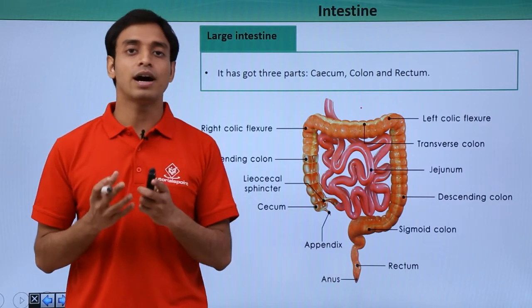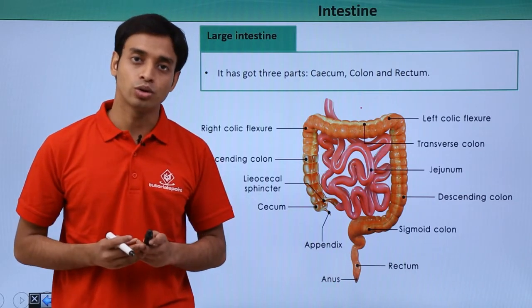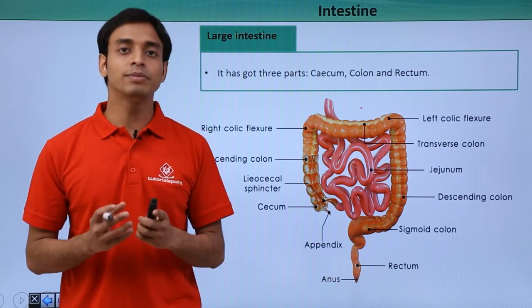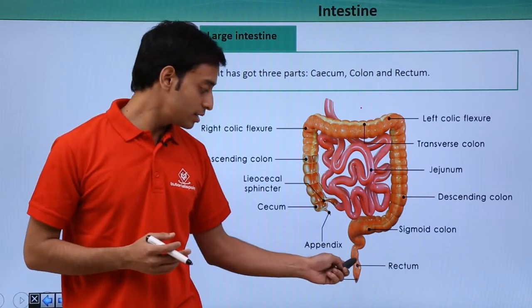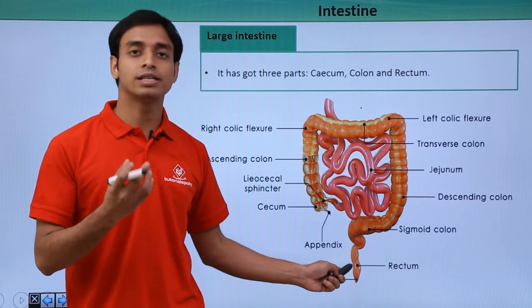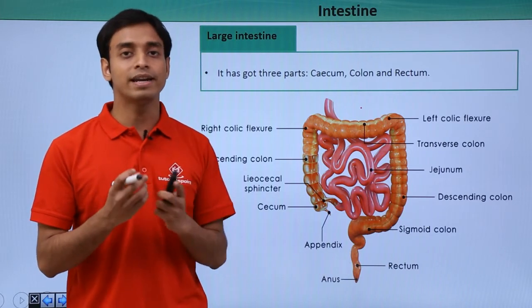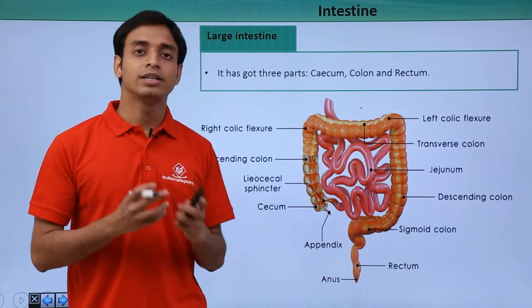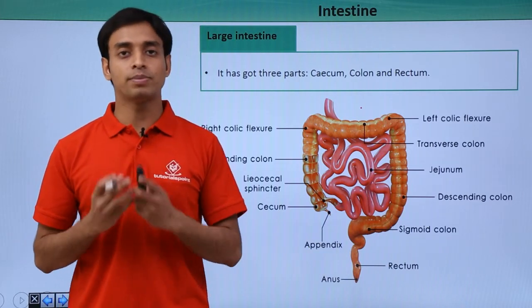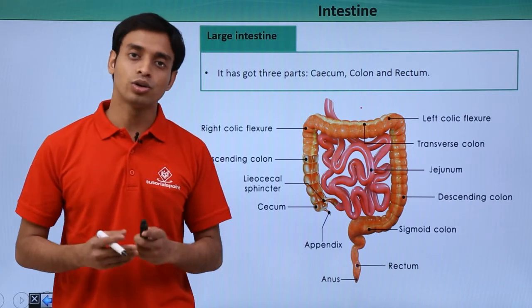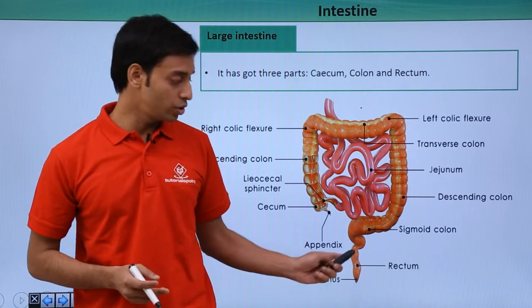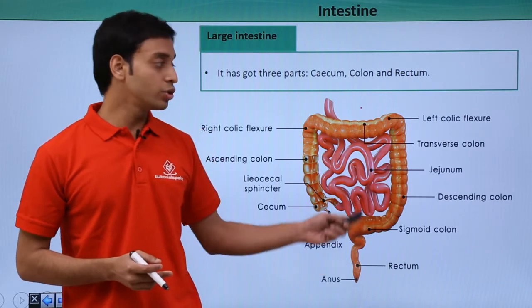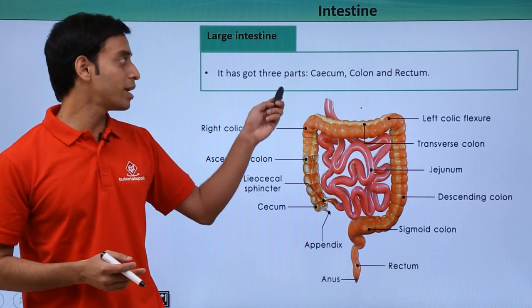The rectum is the area where feces are temporarily stored. The rectum leads to the anus, which is controlled by the anal sphincter. Through the anus, the undigested products are thrown out of the body.